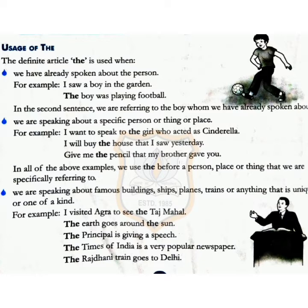In all the above examples, we use 'the' before a person, place, or thing that we are specifically referring to. The usage of 'the' is also for famous buildings, ships, planes, trains, or anything that is unique or one of a kind.